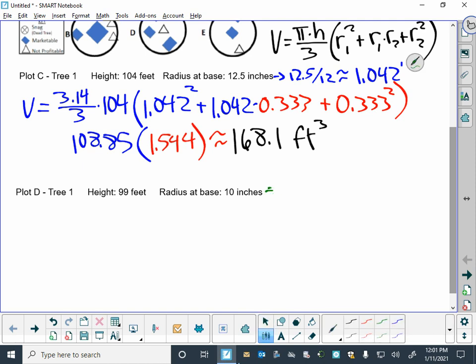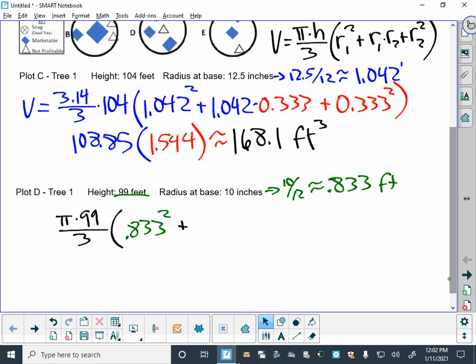Let's try another one. So first step along the way, convert this to 10 over 12, so that in feet is approximately 0.833 feet. Here's my height already in feet. So the formula again was pi times the height, which is 99, divided by three, times the radius at the base, 0.833 squared, plus the radius at the base, the 0.833, times the radius at the top, which was 0.333, plus the 0.333 squared.